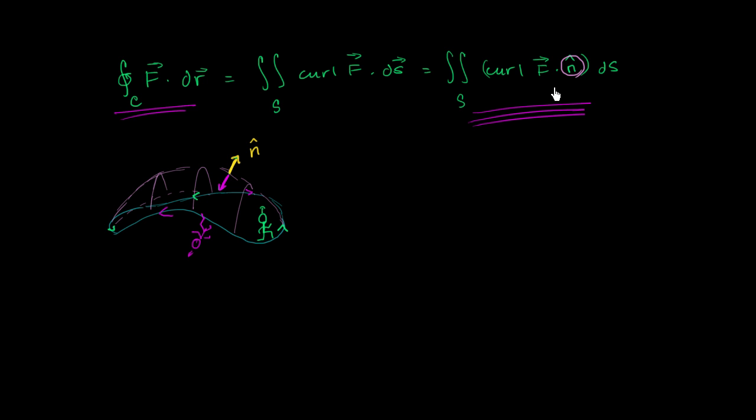And then the contour, or the direction that you would have to traverse the boundary for this to be true, is the direction with which the surface is to your left.